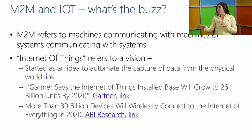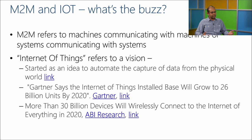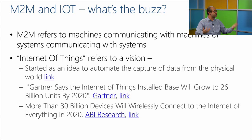Let's talk about buzzwords. With M2M and IoT, just in terms of definitions: M2M generally refers to devices talking to devices — machine to machine — or most of the time it's actually systems talking to systems. These are patterns of communication generally not involving human interaction. IoT — Internet of Things — started as a vision that we could automatically capture data from the physical world and use it to exchange information and achieve cool scenarios.